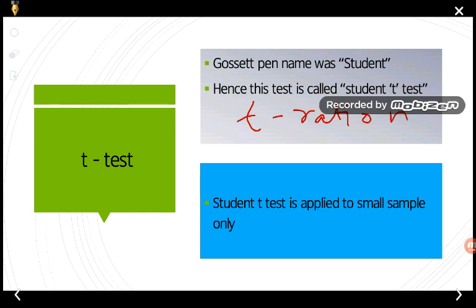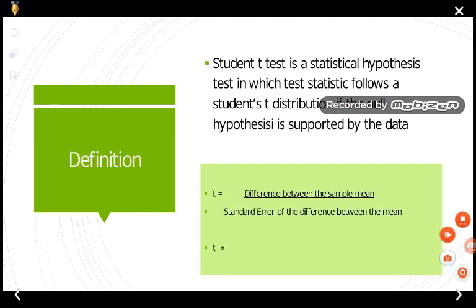The Student t-test is applied to small samples only — that is, when the sample size is less than 30. So the Student t-test is used with small samples, and it was worked out by W.S. Gosset, whose pen name was Student.